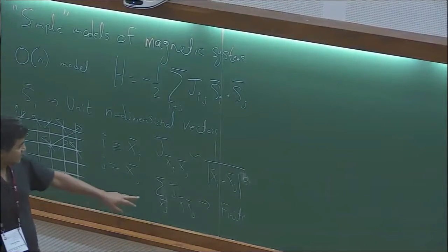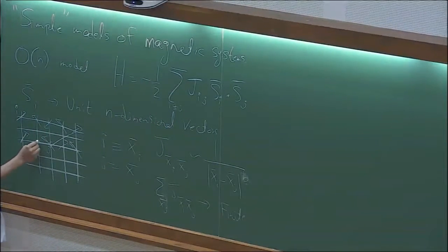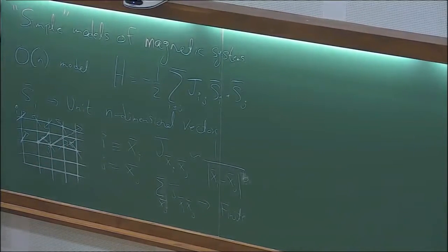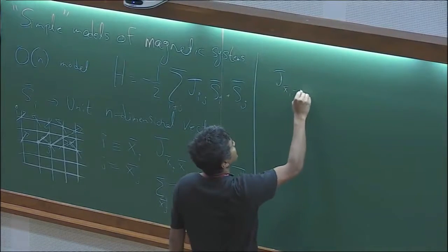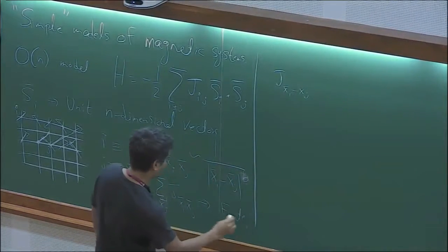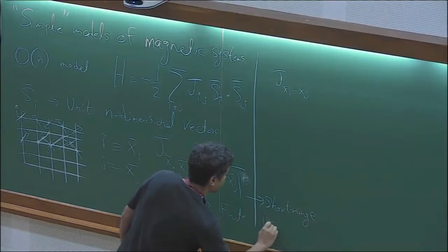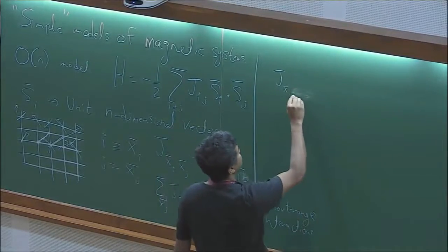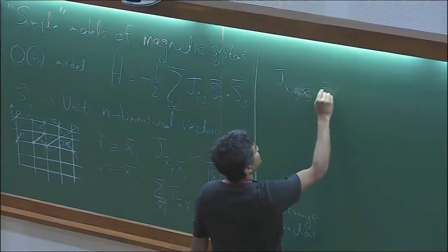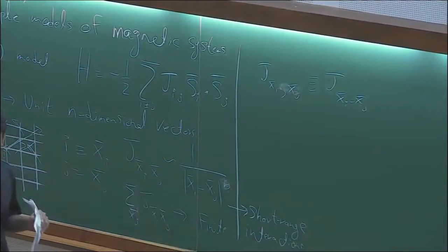I choose J so that there's translational invariance in the system, which means the interaction strength between any two spins just depends on the relative distance between I and J. J(x_i, x_j) depends only on the relative distance between the sites — that corresponds to translational invariance in the system.